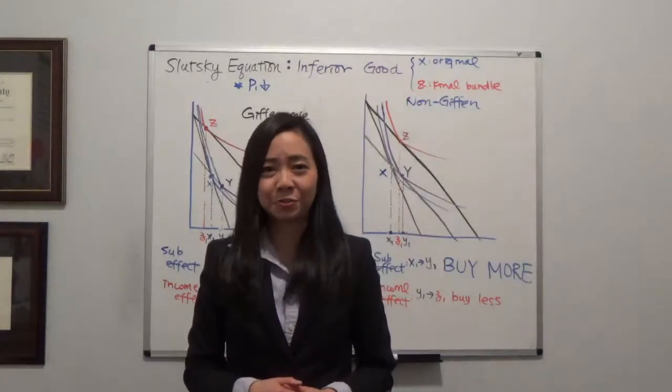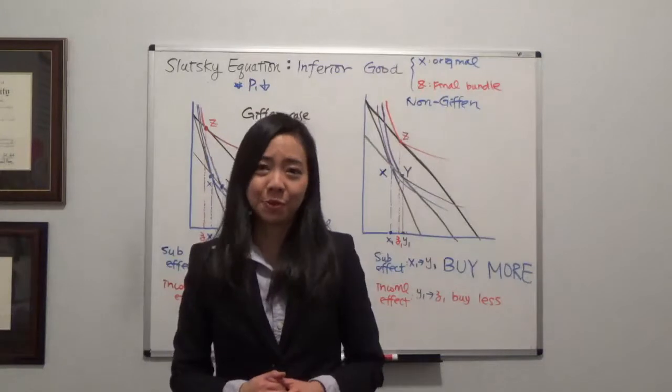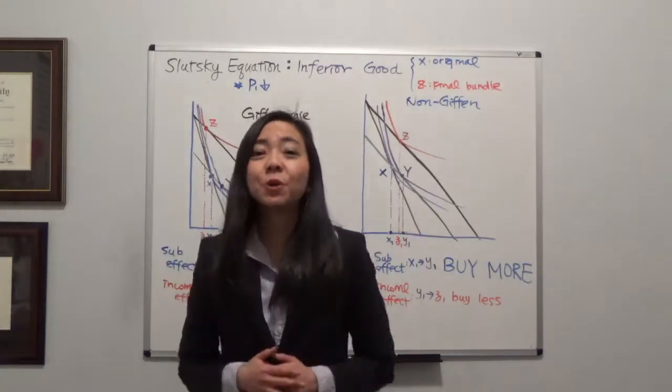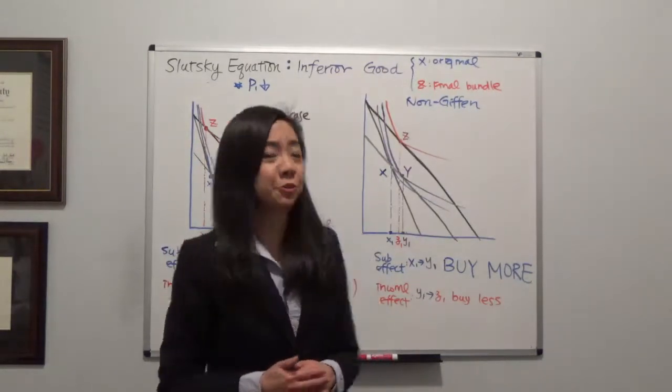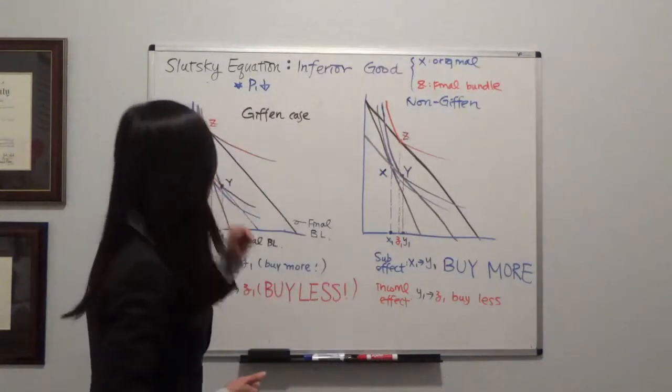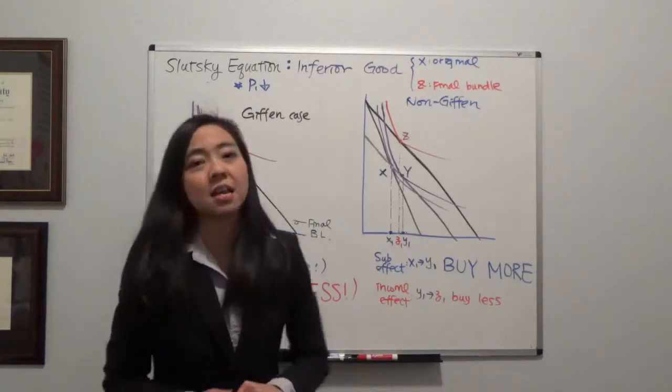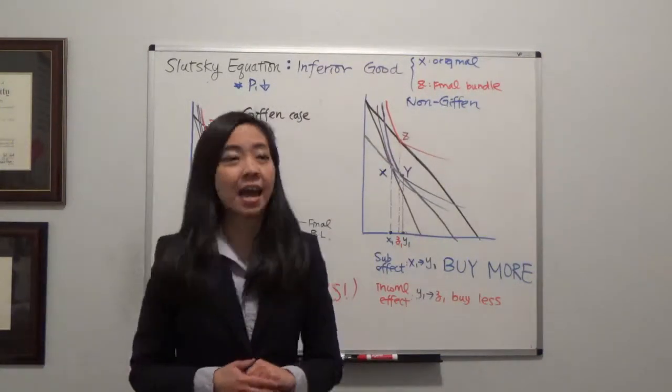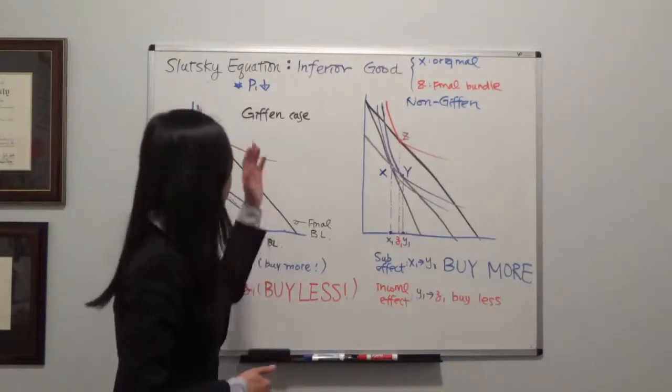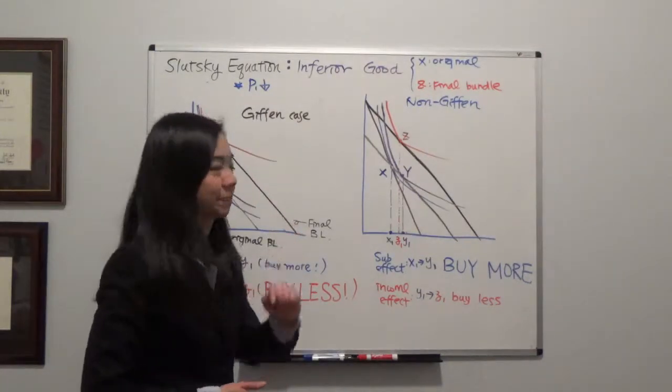Hello, everyone. My name is Iris Franz. Today we're going to continue to talk about the Slutsky equation. In particular, I'm going to talk about inferior goods.